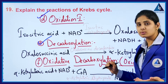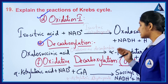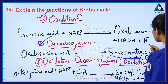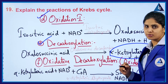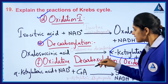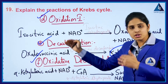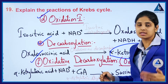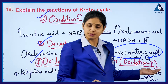The oxalosuccinic acid reacts with the enzyme oxalosuccinic decarboxylase, which helps in the production of alpha-ketoglutaric acid and carbon dioxide is released. This alpha-ketoglutaric acid then undergoes oxidative decarboxylation, which is referred to as oxidation 2.